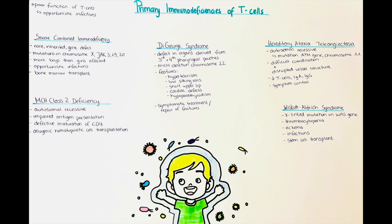Next we will talk about DiGeorge syndrome. This is a primary immune disorder due to a congenital defect in organs derived from the third and fourth pharyngeal pouches during gestation. The epithelium of the thymus as well as the parathyroid glands are derived from these pouches. Since the thymus is where T-cells mature and the parathyroid gland regulates calcium levels by producing parathyroid hormone, the pathophysiology of this disease becomes logical.